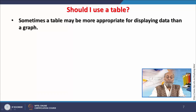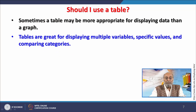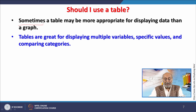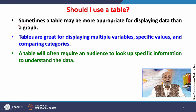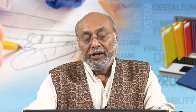Tables are sometimes more appropriate for displaying data than graphs. Tables are great for displaying multiple variables, specific values, and comparing categories. However, if there are too many rows, tables are not preferable. A table often requires the audience to look up specific information, whereas a graph would be more logical. The choice depends on the kind of data and the information you want to share.